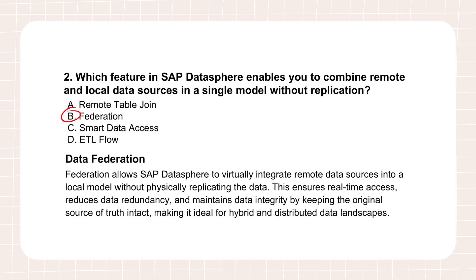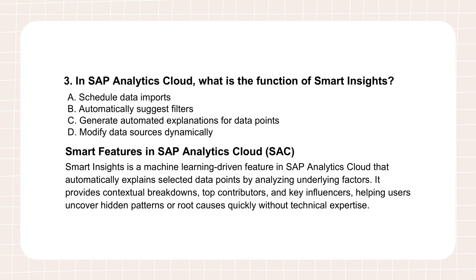Sometimes you're looking at a chart — maybe sales dipped — and you see the what, but you desperately need the why. That's where Smart Insights comes into play in SAP Analytics Cloud. You select a data point in your chart or table, like that sales dip, and Smart Insights automatically analyzes it and gives you contextual explanations. It identifies the main contributing factors — for example, this dip was mainly driven by region X or product Y saw the biggest drop. It breaks down the numbers behind the number, doing that initial diagnostic work for you, so users can understand trends and anomalies much faster without manually slicing the data or writing complex queries.